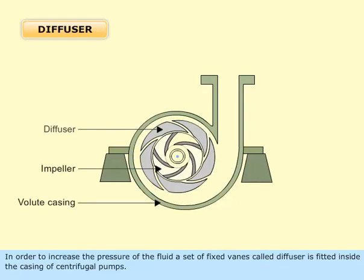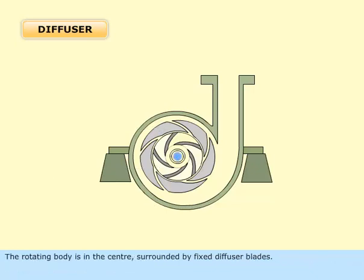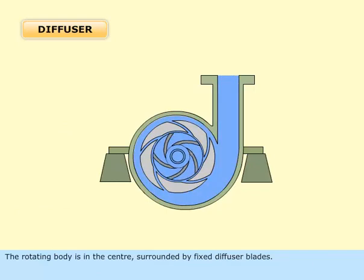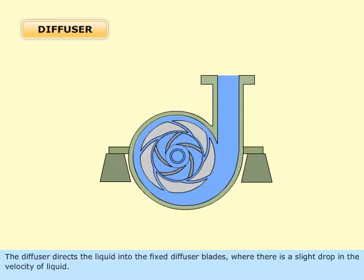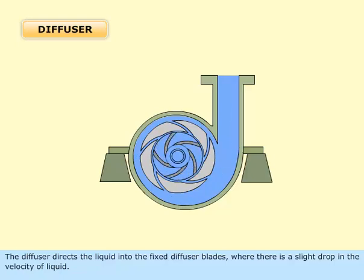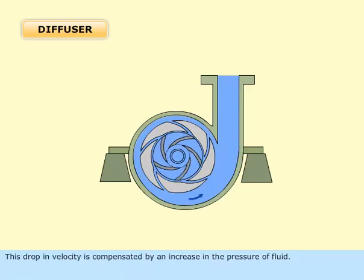In order to increase the pressure of the fluid, a set of fixed vanes called a diffuser is fitted inside the casing of centrifugal pumps. The rotating body is in the center surrounded by fixed diffuser blades. The diffuser directs the liquid into the fixed diffuser blades where there is a slight drop in the velocity of liquid. This drop in velocity is compensated by an increase in the pressure of the fluid.